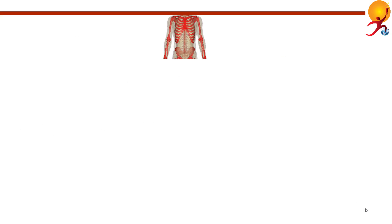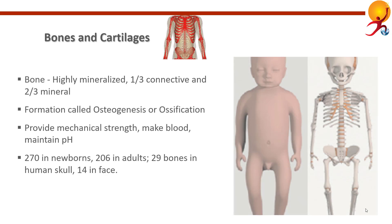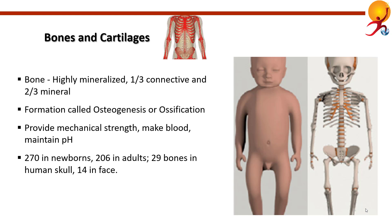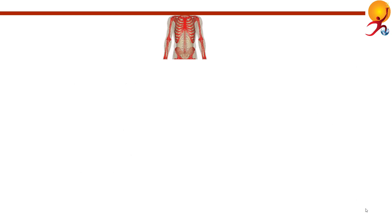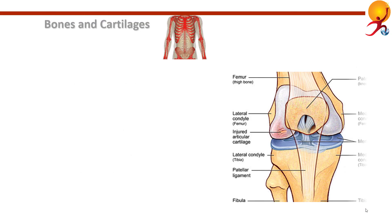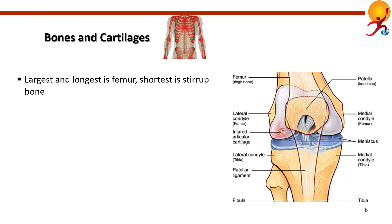The total number of bones in the human skull is 29, and the face is made up of 14 bones. The largest and longest bone in the human body is the femur or the thigh bone, whereas the shortest is the stirrup bone in the middle ear.